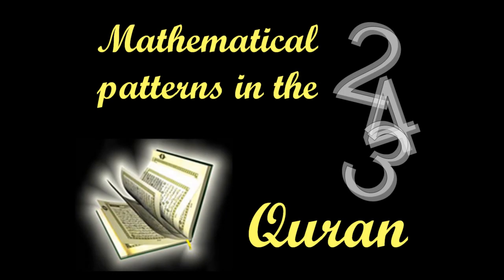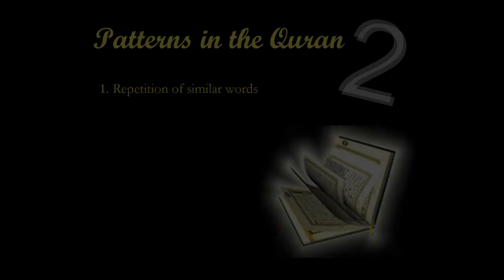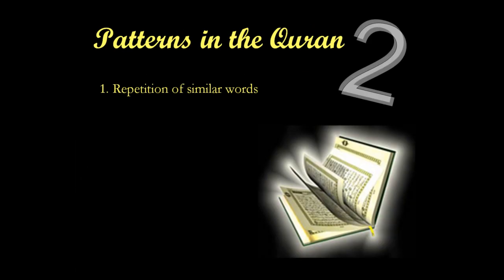When Muslims talk about the mathematical patterns in the Qur'an, three areas that are often discussed are: 1. The repetition of similar words, whether they be synonyms or antonyms. 2. The relationship between chapter numbers and verse numbers. 3. The solving of certain equations using references from the Qur'an, and we'll be showing a video on this topic at the end of the presentation. Let's examine each one in more detail.